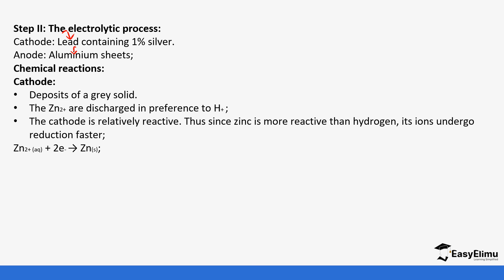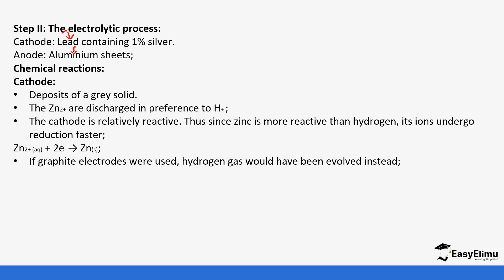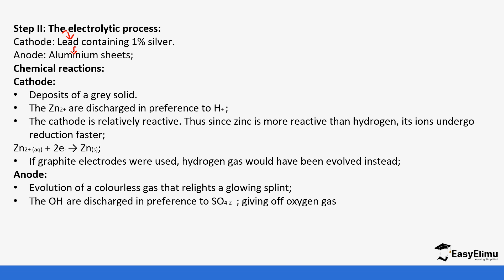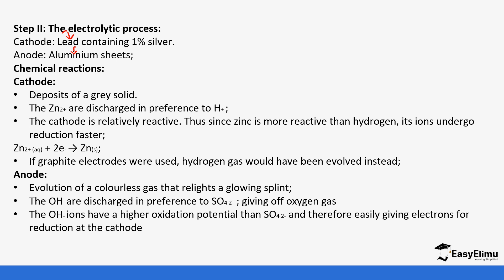Zinc ions gain two electrons to form solid zinc at the cathode. If graphite electrodes were used, hydrogen gas would be produced instead — this shows why using specific electrodes matters. At the anode, oxygen gas is produced because hydroxide ions are present alongside sulfate ions, and hydroxide ions are preferred due to their higher electrode potential and greater tendency to lose electrons.